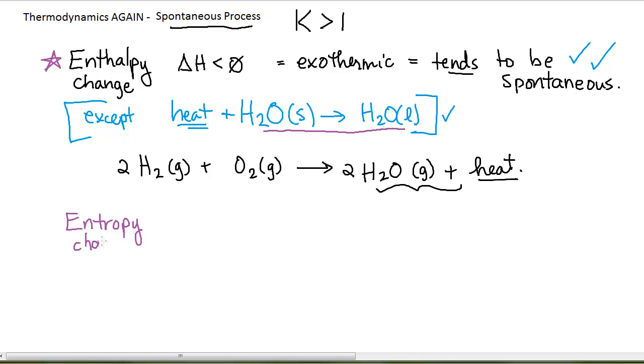An entropy change is given the symbol delta S. The symbol for entropy is S. It is the change in the randomness or disorder. And if a system gets more random or more disordered, we say that the entropy change is positive. It's either positive or negative.